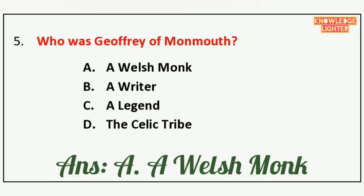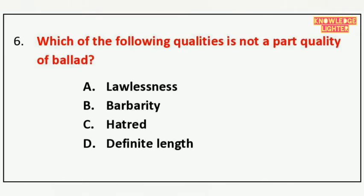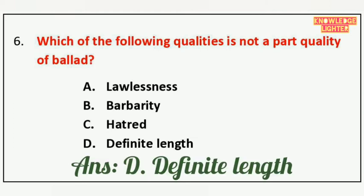Your next question is: Which of the following qualities is not a part quality of Ballad — option A Lawlessness, option B Barbarity, option C Hatred, option D Definite Length. And the correct answer is option D Definite Length.